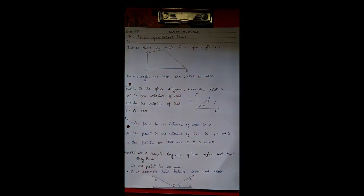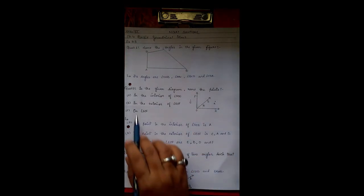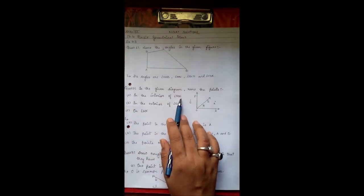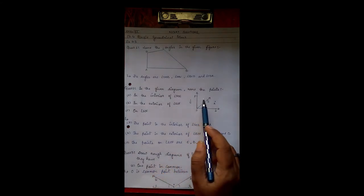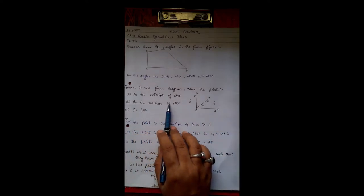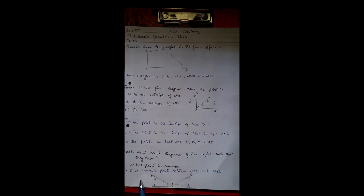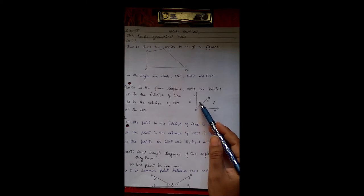Question 2: In the given diagram, name the points in the interior of angle DOE. So the point in the interior of angle DOE is A. In the exterior of angle EOF, that is point C. Points on angle EOF are B, O, F. These are the points on the angle BOF.